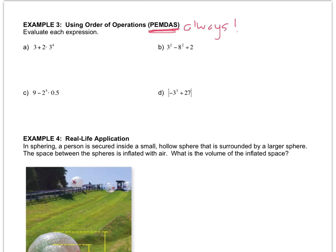Don't skip steps and don't do it in your head. Write it out. 3 plus 2 times 3 to the 4th is 81. So now I have to do 2 times 81 first. So that gives me 3 plus 162. So the answer is 165.